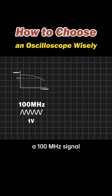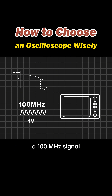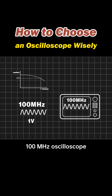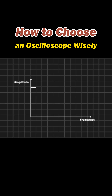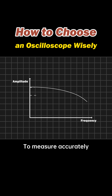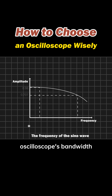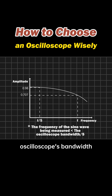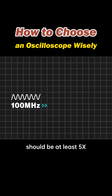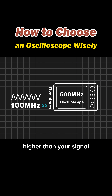So if you measure a 100 MHz signal with a 100 MHz oscilloscope, you'll only get 0.707 V. To measure accurately, the oscilloscope's bandwidth should be at least 5 times higher than your signal.